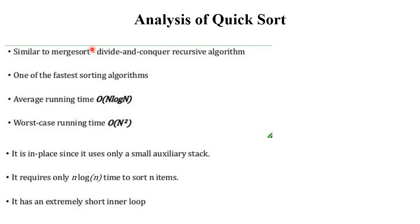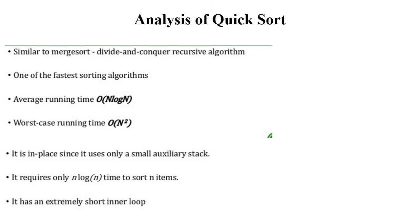Quick sort is similar to merge sort — which will be explained in the next video. It uses a divide and conquer recursive algorithm and is one of the fastest sorting algorithms. The average complexity is O(n log n) and the worst case complexity is O(n²). Since it uses only a small auxiliary stack, it requires O(n log n) for sorting n items and has an extremely short inner loop.